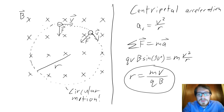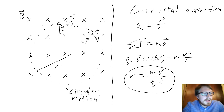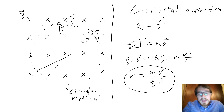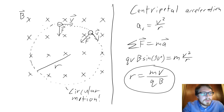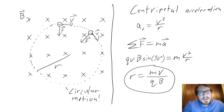A faster particle will travel in larger circles — that makes sense. Smaller magnetic fields will also give larger circles. You can also work out how much time it takes the charge to complete a full circle by taking distance over velocity.